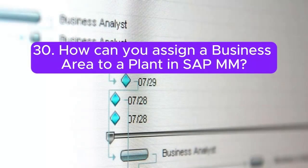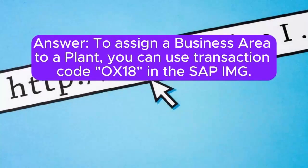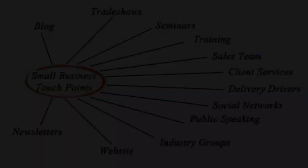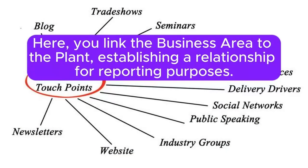Question 30: How can you assign a business area to a plant in SAP MM? To assign a business area to a plant, you can use transaction code OX18 in the SAP IMG. Here, you link the business area to the plant, establishing a relationship for reporting purposes.